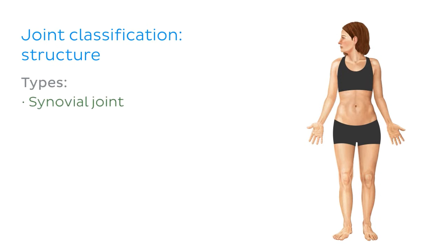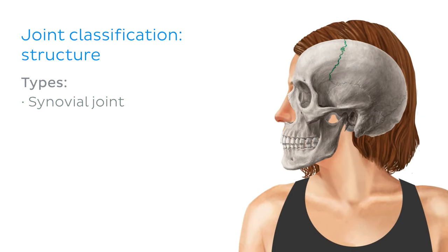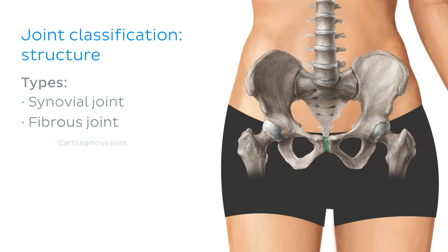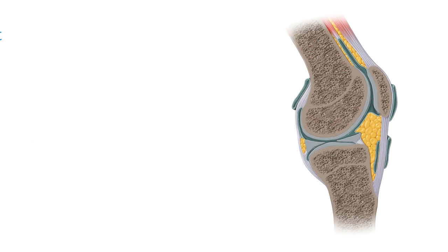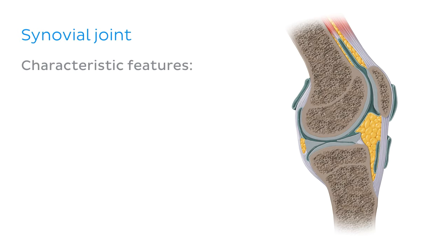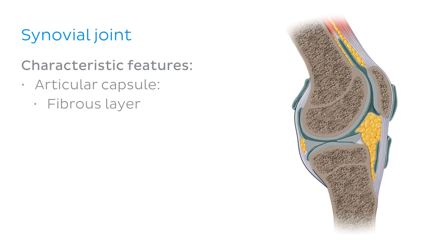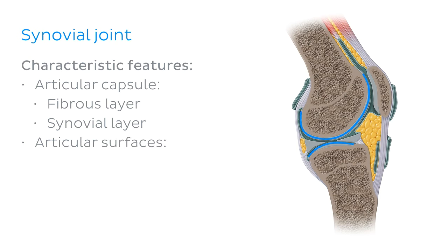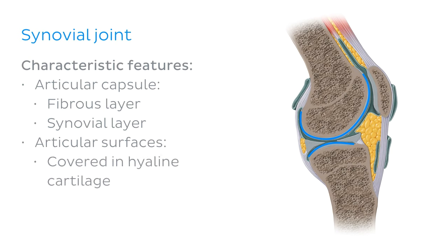There are three distinct types: the synovial joint, the fibrous joint, and the cartilaginous joint. Let's start with the synovial joint, as it's the most common joint found in the human body. Synovial joints have several characteristic features, which we can see using this sagittal illustration of the knee joint. First of all, synovial joints are surrounded by an articular capsule. This capsule consists of an outer fibrous layer, which helps to stabilize the joint, and an inner synovial layer, which absorbs and secretes synovial fluid, lubricating the joint. It's important to know that the articular surfaces of a synovial joint are covered in hyaline cartilage, also known as articular cartilage, which acts to reduce friction and assist in shock absorption.